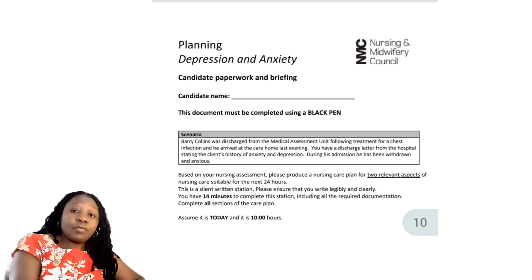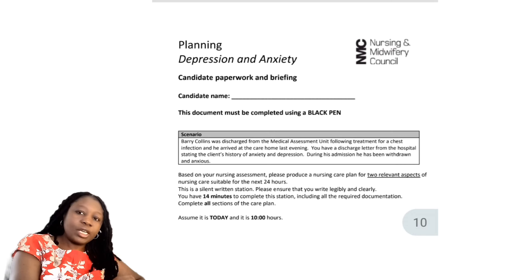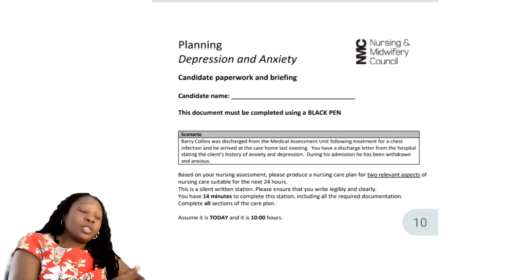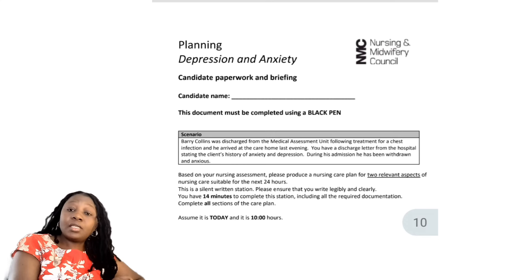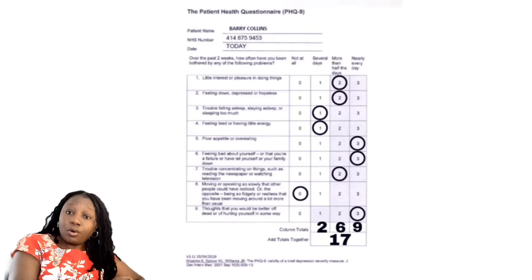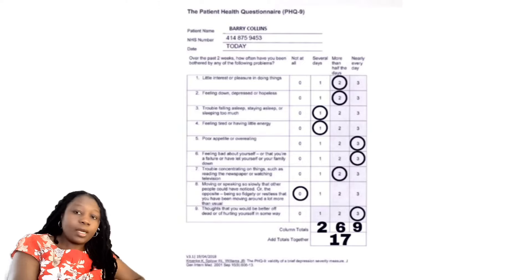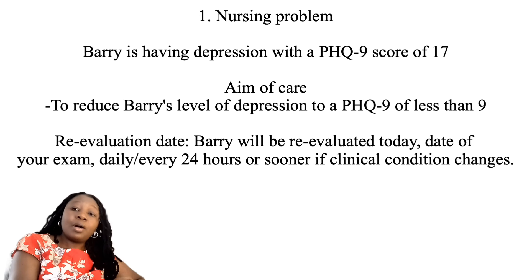As we've always advised, once you have your question paper and answer booklet, the first thing you should write is your name and your signature so that you don't forget. For this patient, if you watched the video of the assessment, he has a PHQ-9 score of 17 and a NEWS score of zero. That's what I'm going to be using for my care plan.